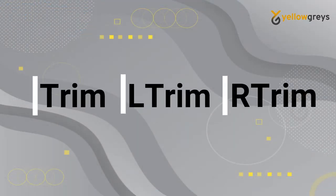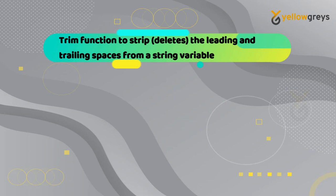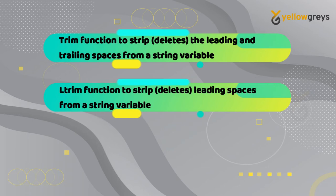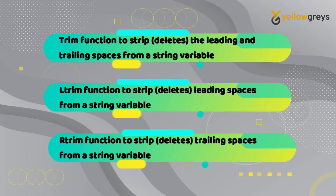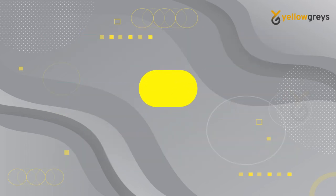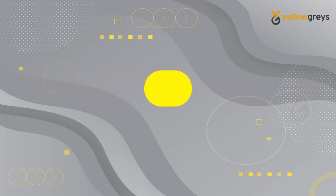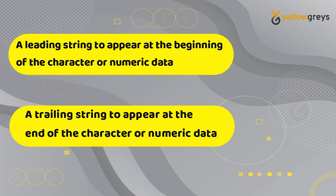The Trim function strips the leading and trailing spaces from a string variable. The LTrim function strips leading spaces from a string variable. The RTrim function strips trailing spaces from a string variable. Leading characters appear at the beginning of the character or numeric data. Let's take an example of the word 'UiPath Studio' — here you can see two or more spaces in the front.